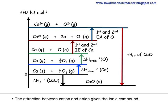The attraction between the cation and the anion gives us the ionic compound. This is a bond formation process, hence it is exothermic. This will be the lattice energy of calcium oxide. By Hess's law, the enthalpy change of formation of calcium oxide can be obtained by summing the different terms.